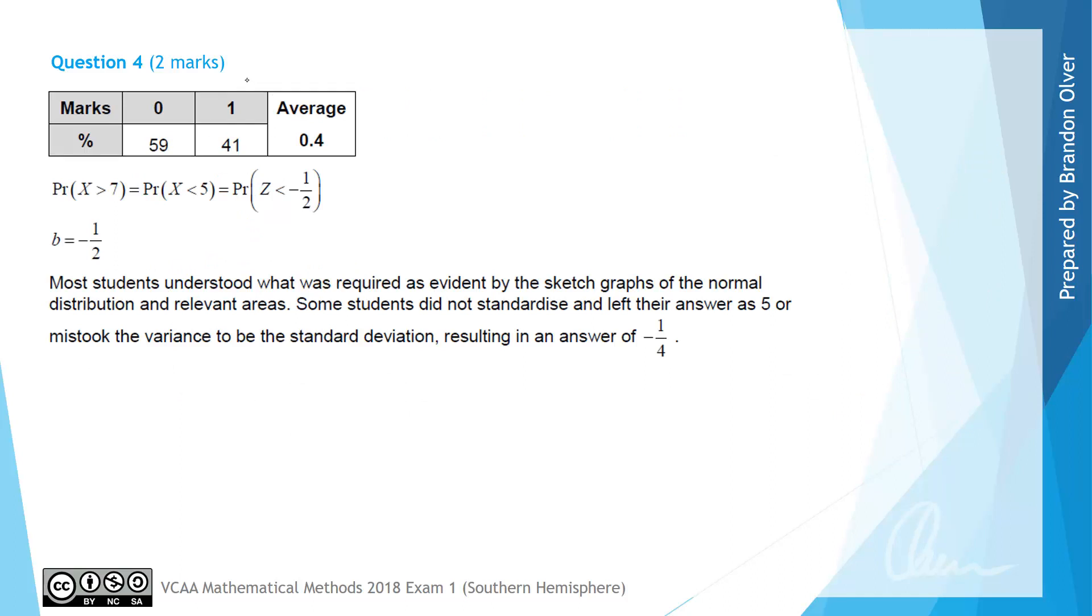From the examiner's report we can see that 40% of students got this correct, and that most students understood what was required as was evidenced by a sketch graph of a normal distribution and relevant areas being highlighted. Some students did not standardize and left their answer as 5, or they mistakenly thought that the variance was the standard deviation and that resulted in an answer of negative a quarter instead of negative a half.